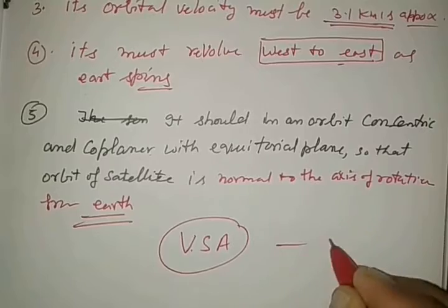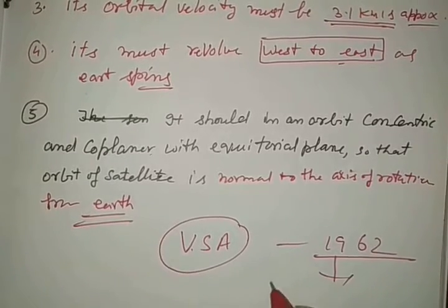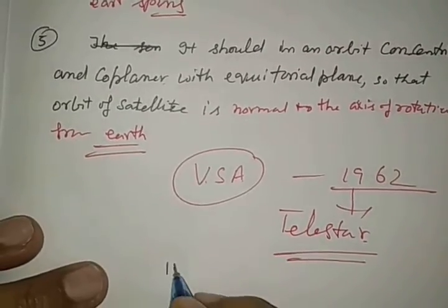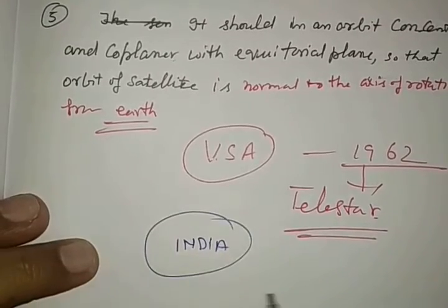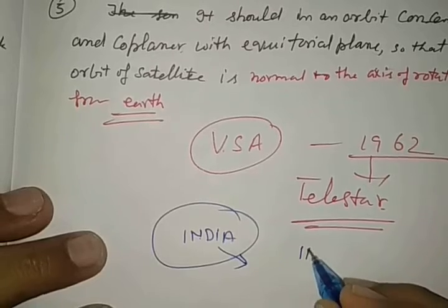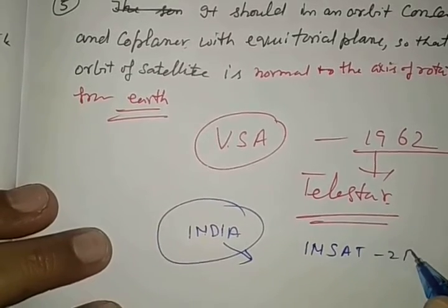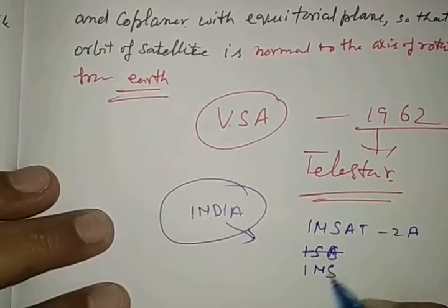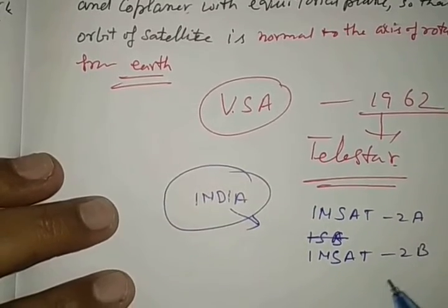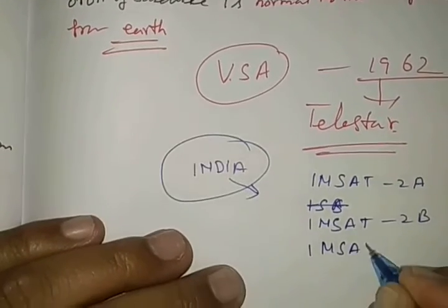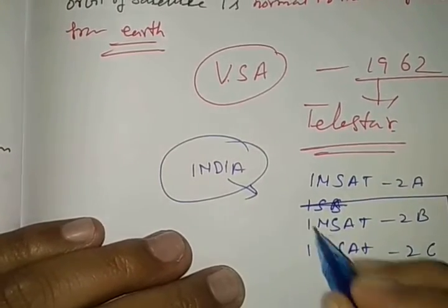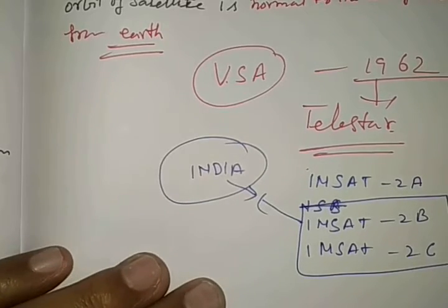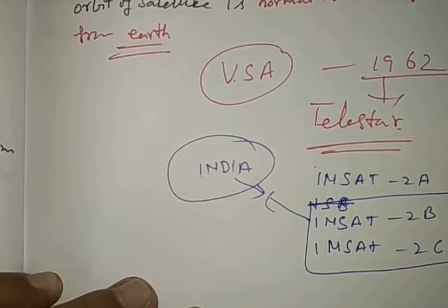The first geostationary satellite was launched by USA, United States of America, in 1962. That satellite was Telstar. My country India also launched INSAT 2A, INSAT 2B and INSAT 2C. In that series INSAT 2B and 2C are geostationary satellites launched by India. This is about geostationary satellites.